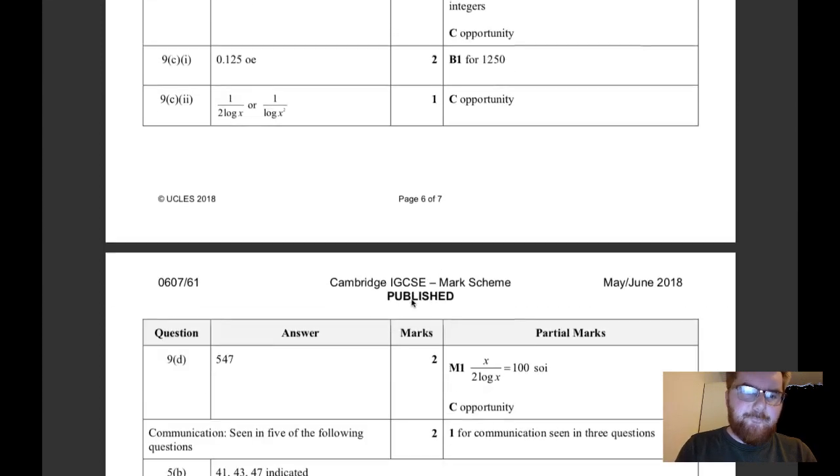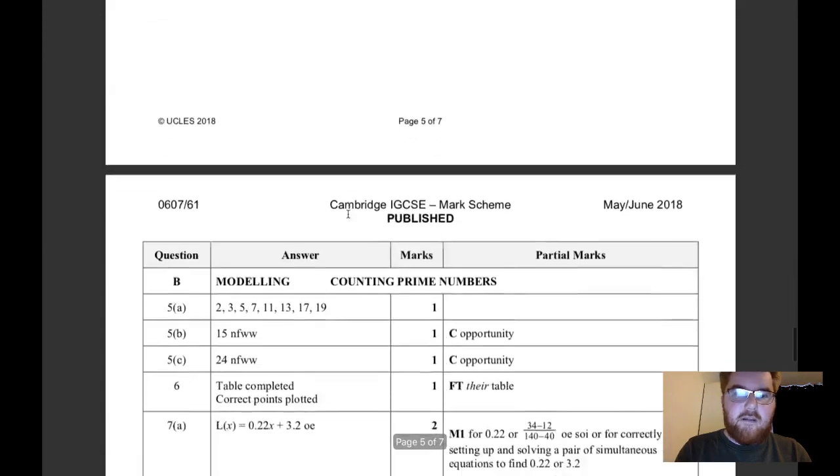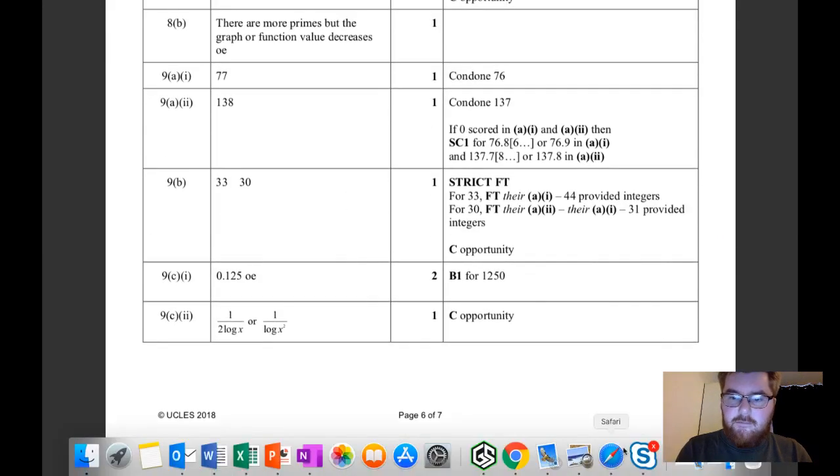How do you communicate this? If we go to the bottom of the mark scheme, it gives you the options of where you can get these communication marks. For this question, you just have to write down the numbers 41, 43, and 47. Often you just need to show your working like you would normally and you'll pick up those communication marks.